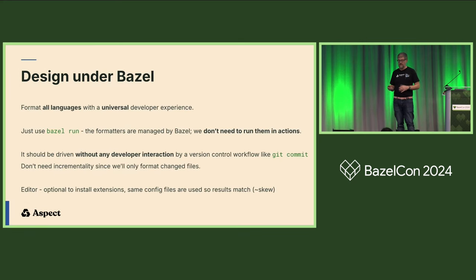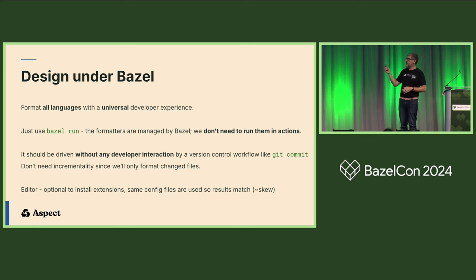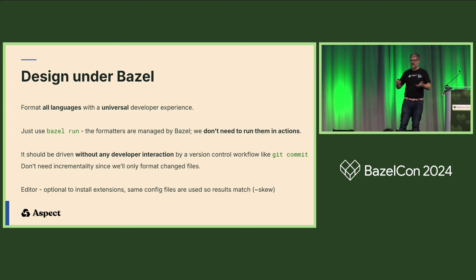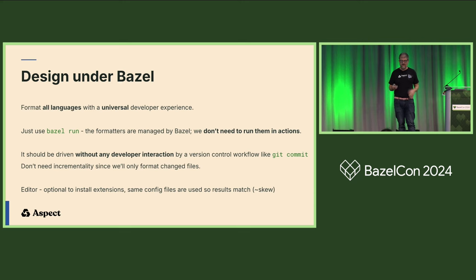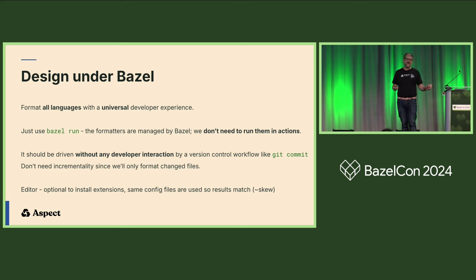How do we marry those principles with Bazel? We want to format all languages with a universal developer experience — one formatter that understands all languages — and use it with Bazel Run. The formatters are downloaded by Bazel, but we don't want to create build files saying how to format files in each package. A lot of code we want to format doesn't even go into the build file, like Markdown. Ideally, formatting is invisible to developers — something like git commit is the right place to do this. The editor should still work, with configuration files shared between what Rules Lint does and what the editor does.